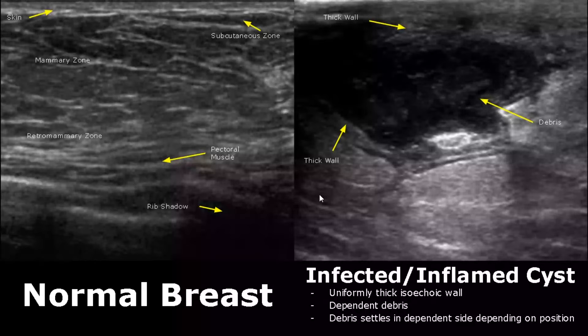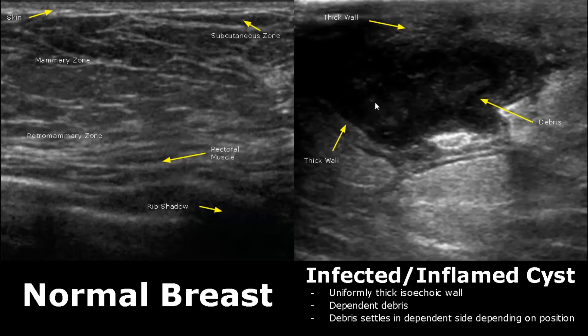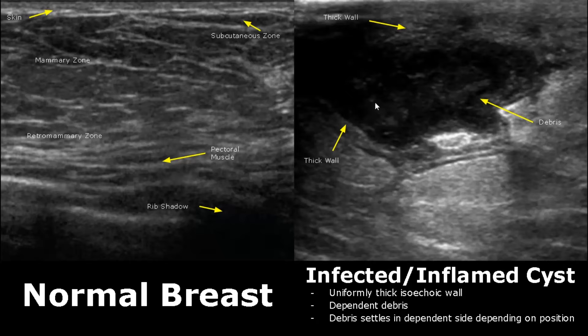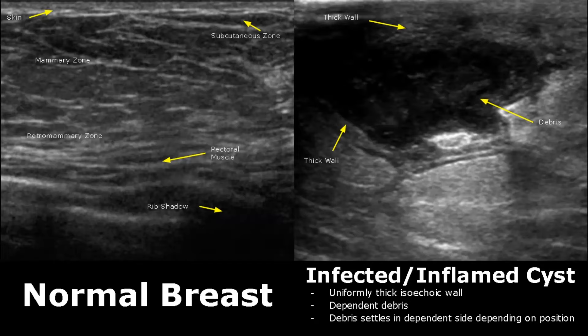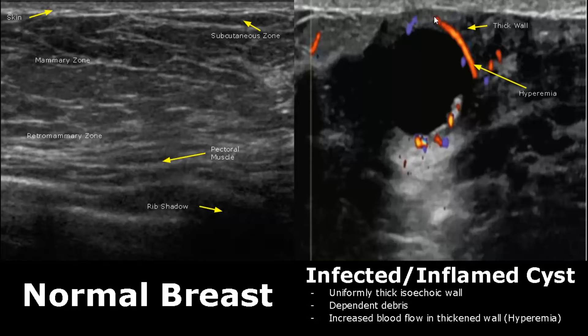Here we have a case of an infected and inflamed cyst. It has thick isoechoic walls and dependent debris, meaning the debris settles due to gravity and moves in accordance with patient position. This feature helps differentiate it from a mural nodule. On Doppler, there is increased blood flow in the thick wall.